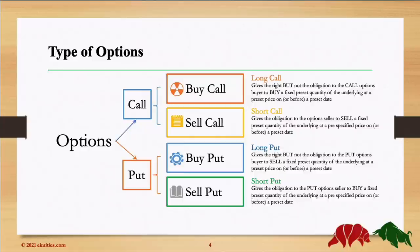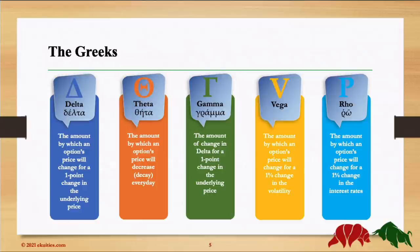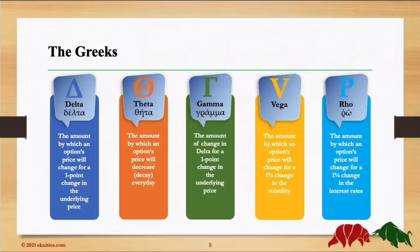Then we moved to Options Greeks. We have five different Greeks. Delta — the amount an option price is expected to move based on one point change in the underlying. Theta — the amount by which an options price will decay every day. Gamma — the amount of change in Delta for one point change in the underlying price. Vega — the amount by which an options price will change for one percent change in volatility. And finally Rho — the amount by which an options price will change for one percent change in the interest rate. Note that four of these affect the underlying options price, except Gamma, which affects the Delta.